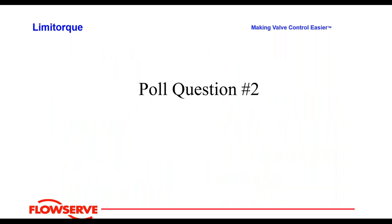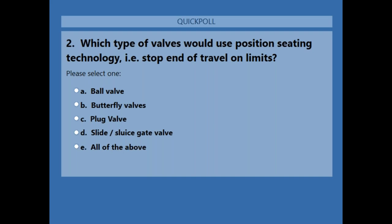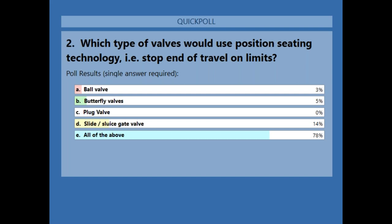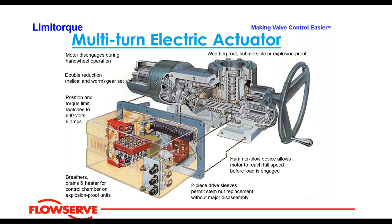Poll Question 2: Which types of valves would use position seating technology — i.e., stop at end of travel on limits? The answer is E — all of the above: ball valve, butterfly valve, plug valve, and slide/sluice gate valve.